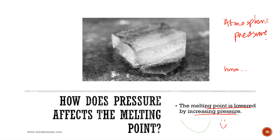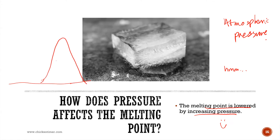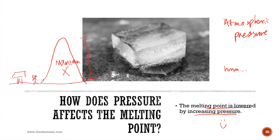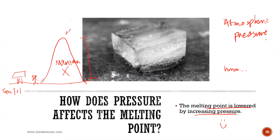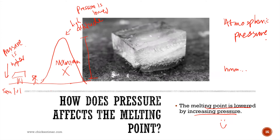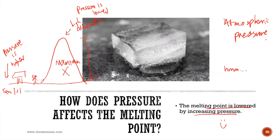If you want to go mountain climbing, this information will be useful. At high altitudes — high up on a mountain — the pressure is lower, whereas at sea level, the atmospheric pressure is higher. You might think the pressure difference is due to temperature, but that's not exactly right.